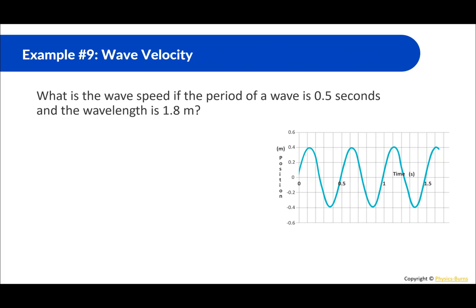What is the wave speed if the period is 0.5 seconds and the wavelength is 1.8 meters? Velocity equals wavelength divided by period: 1.8 divided by 0.5 equals 3.6 meters per second.